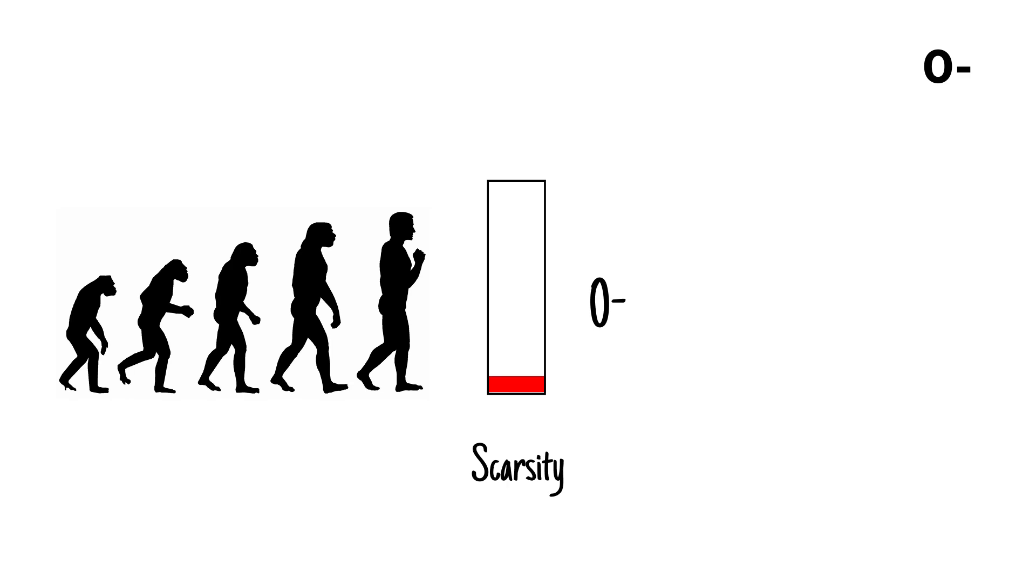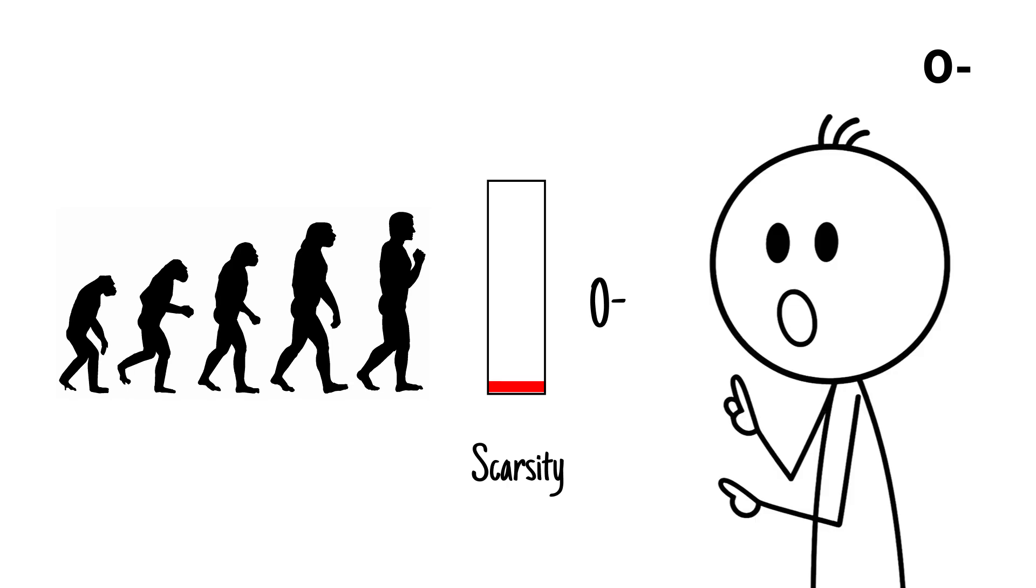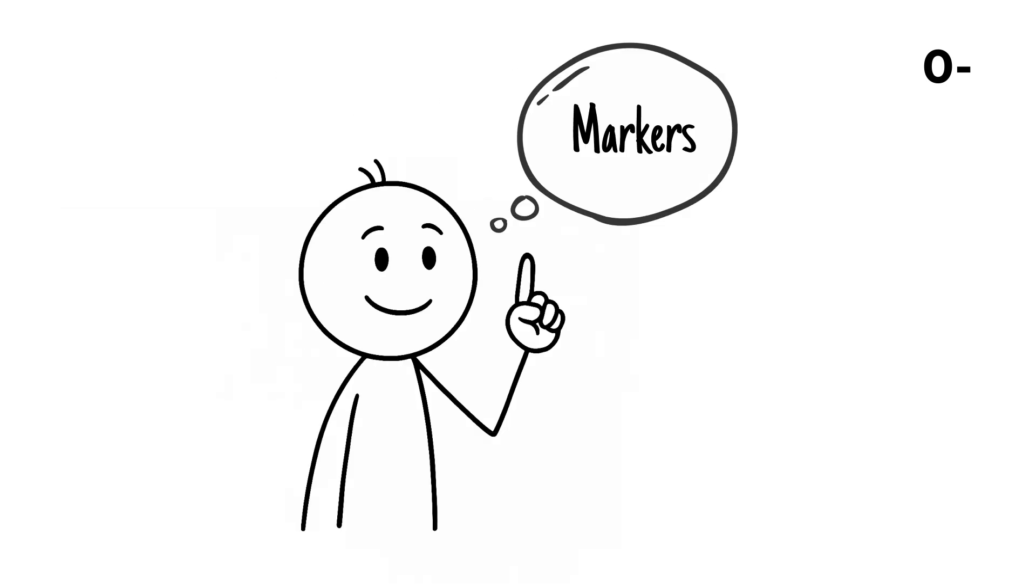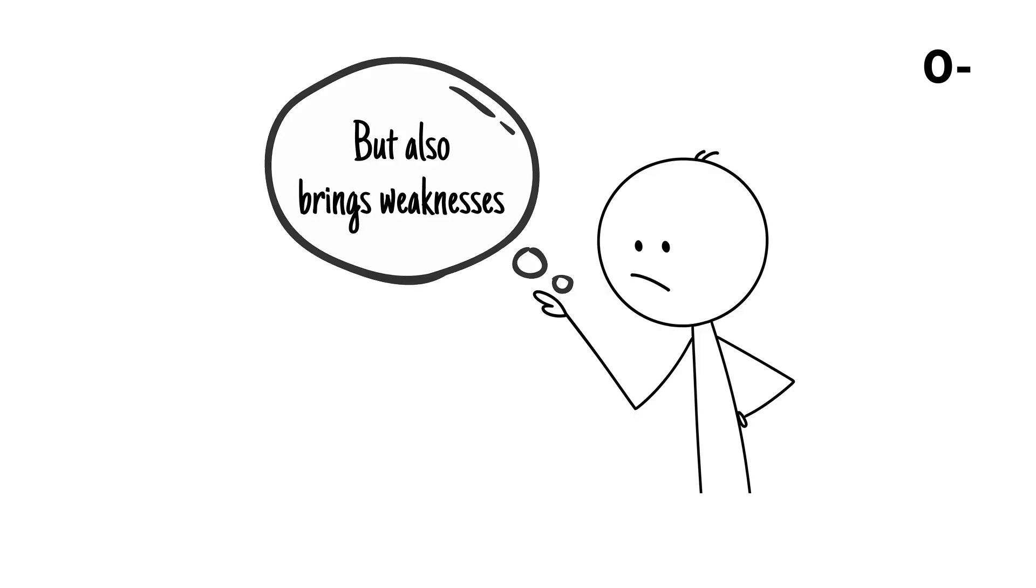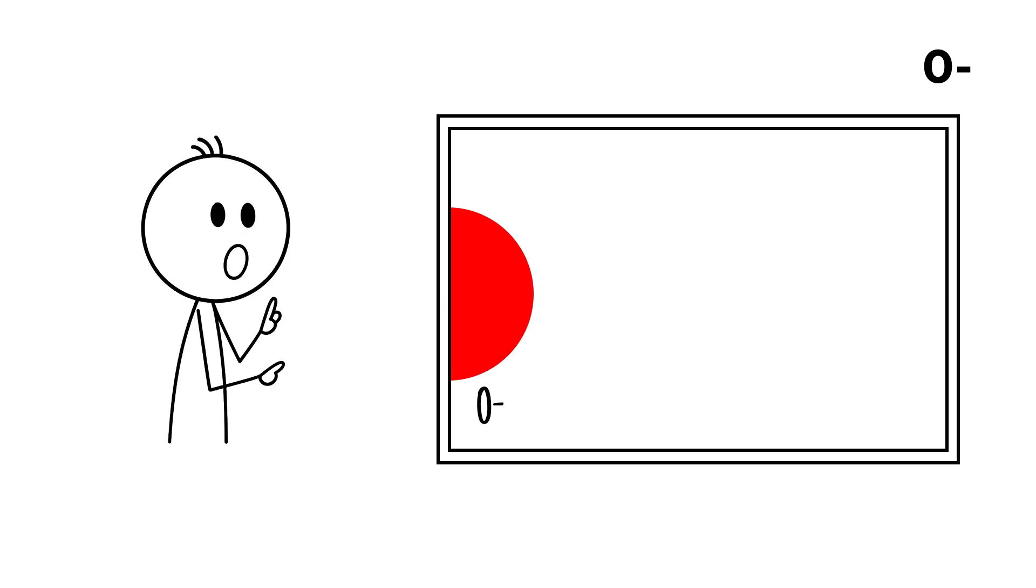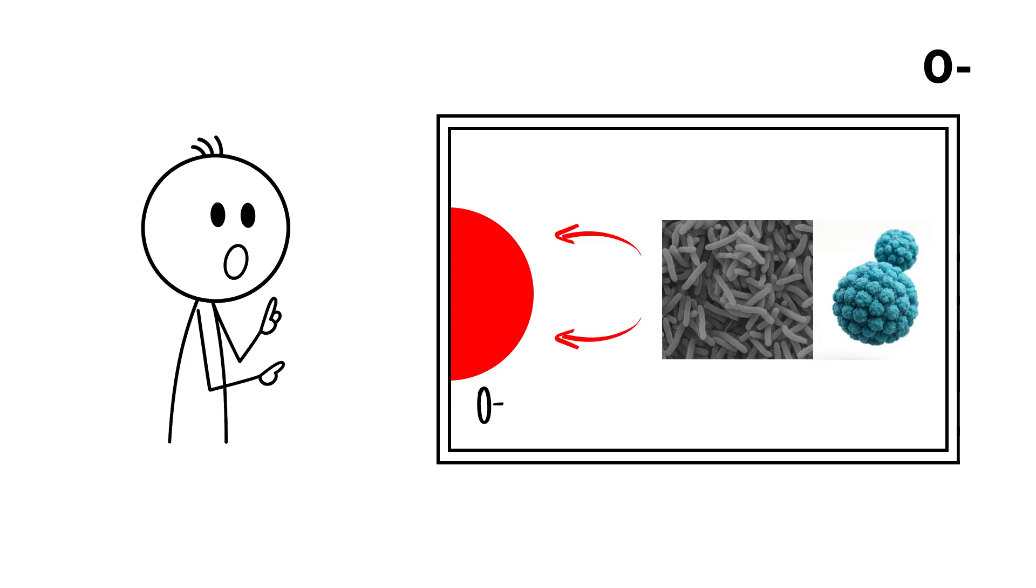From an evolutionary perspective, its rarity highlights how unusual it is to lack all three major blood antigens. The absence of these markers greatly reduces the chance of immune rejection during transfusions, but it also brings weaknesses. People with type O tend to be more vulnerable to severe cholera and norovirus infections because of the exposed H antigen.